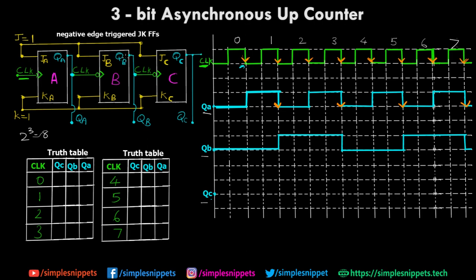QB — the output of the second flip-flop B — is provided as the clock to the C flip-flop. So for QC, QB is acting as the clock. QC will react only to QB's signal at the negative edge. Marking the negative edges of QB: this is the first and this is the second. Starting QC from 0, it stays 0 till the first negative edge of QB, then goes high, stays high till the next negative edge, and gets back low again.